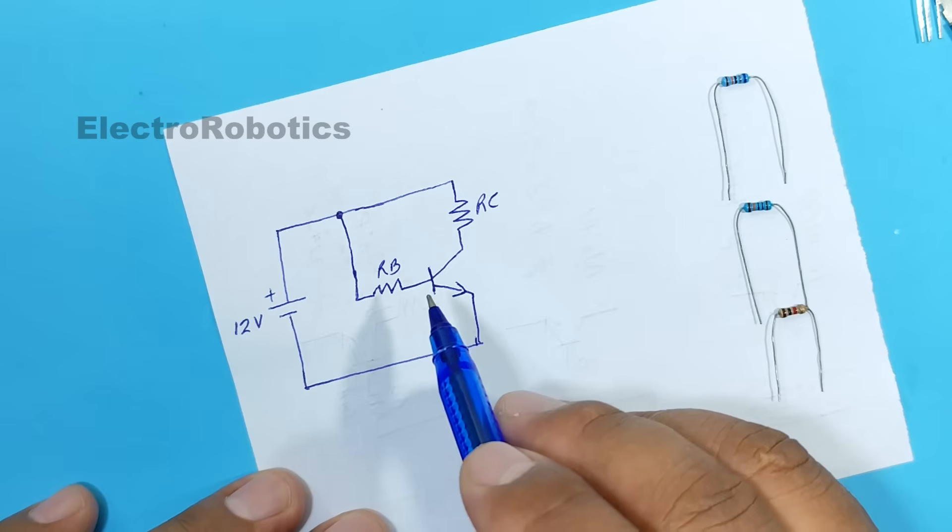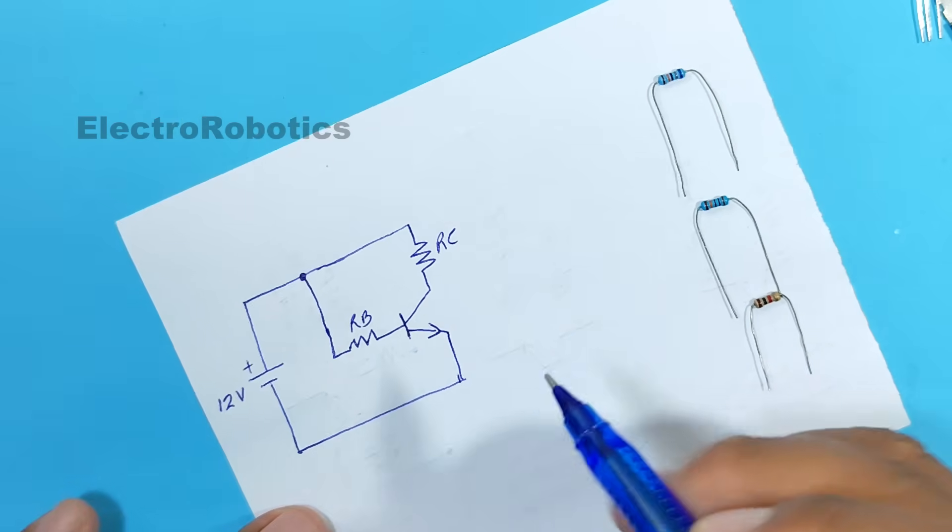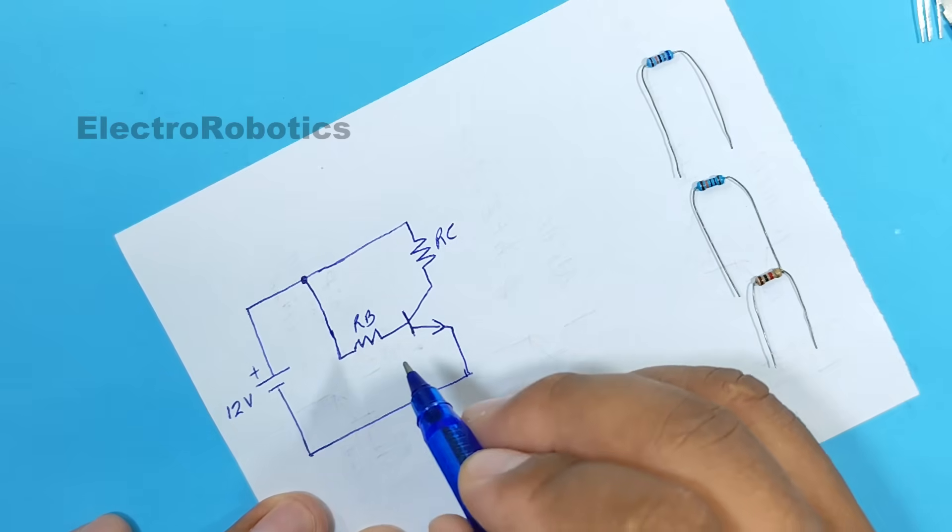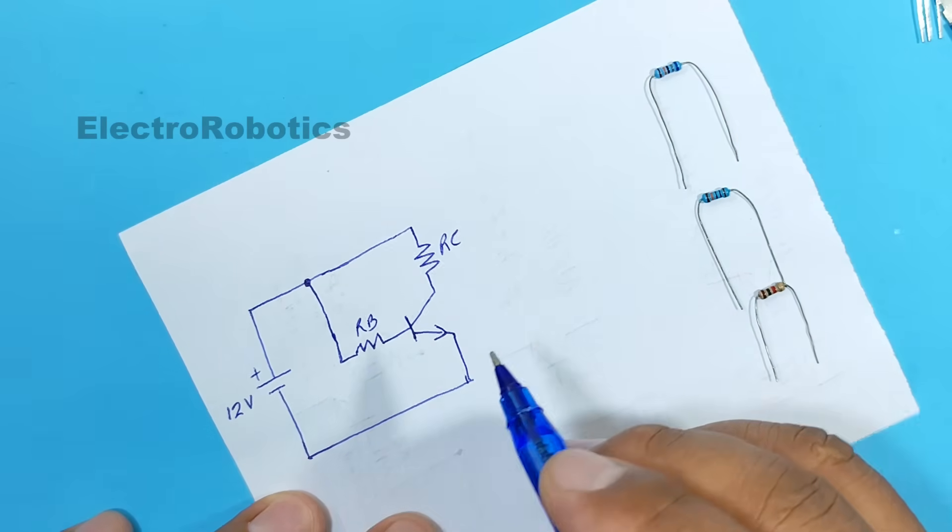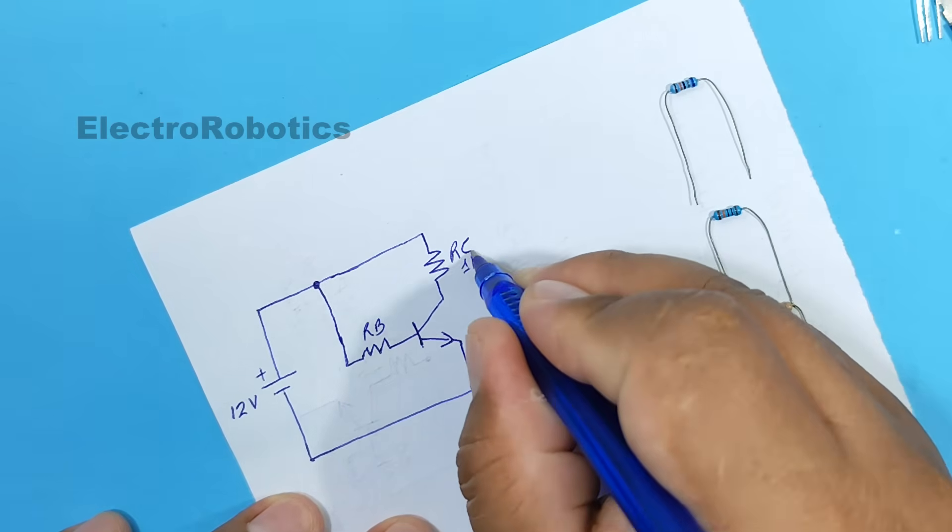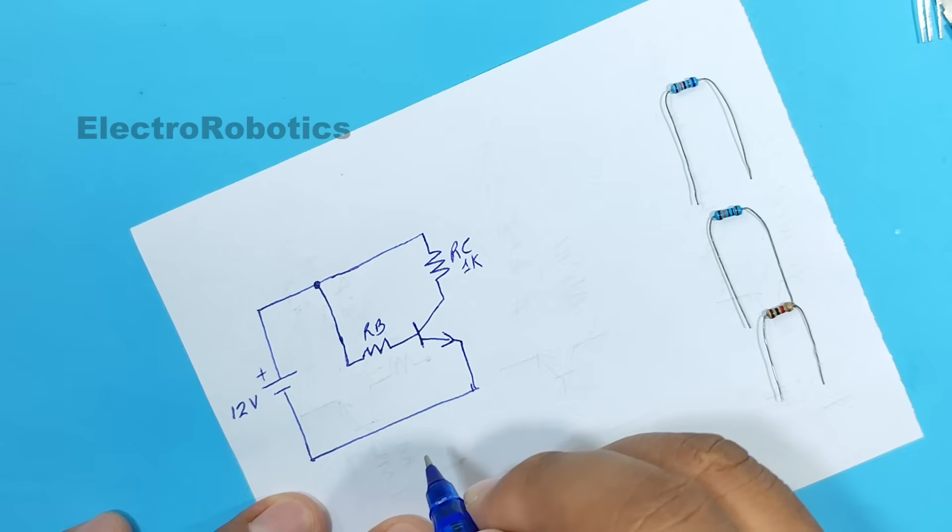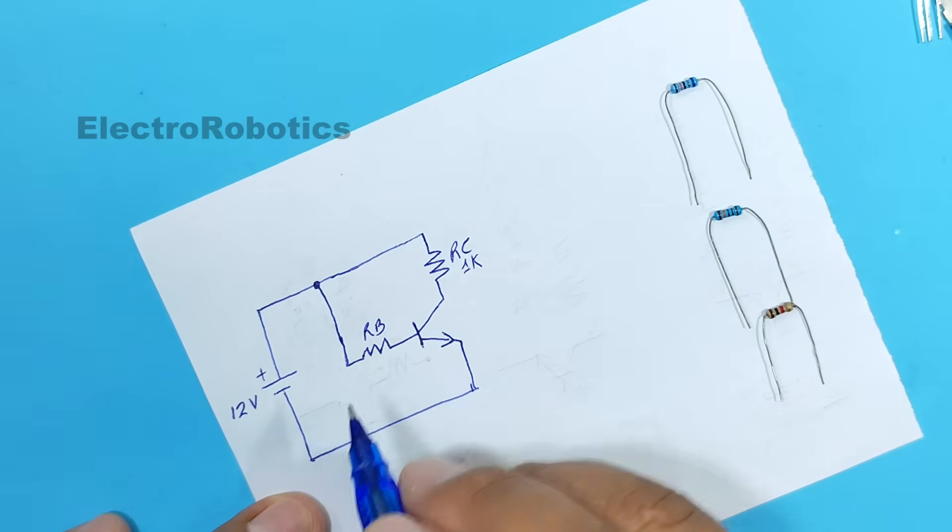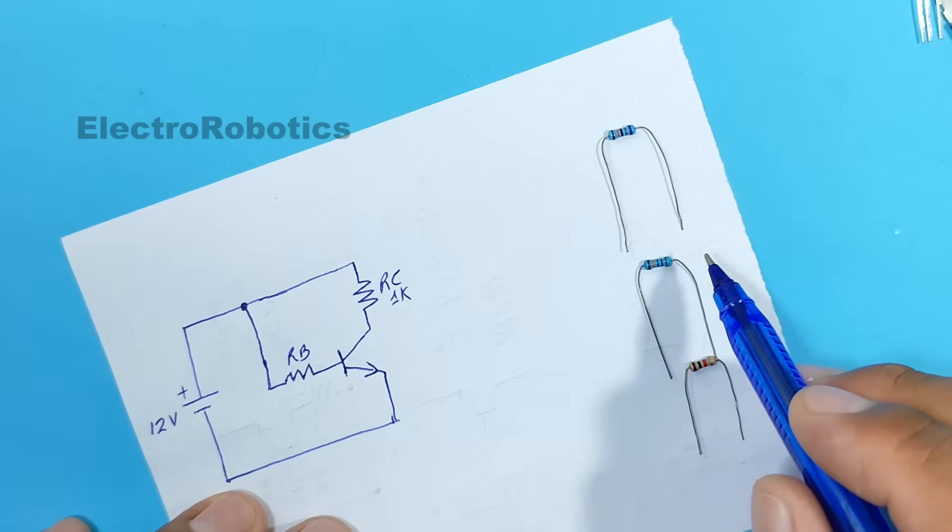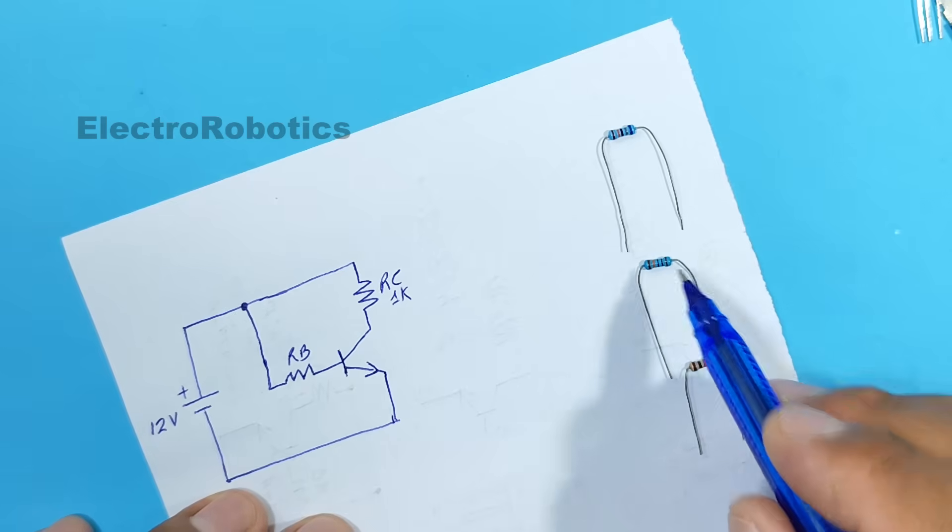The resistors have to have very different values. That is, one of them has to have a very low value, and the other a very high value. In this case, we're going to use a 1 kiloohm resistor as the collector resistor. And as for the base resistor, we need to place a resistor with a very high value.